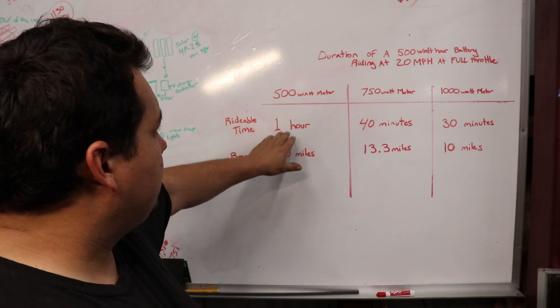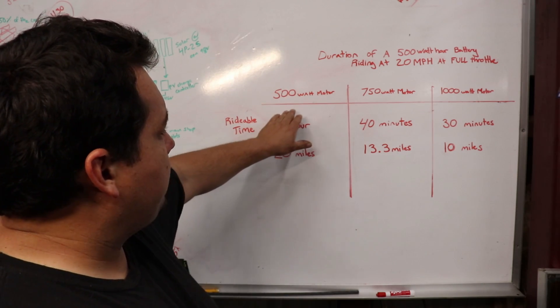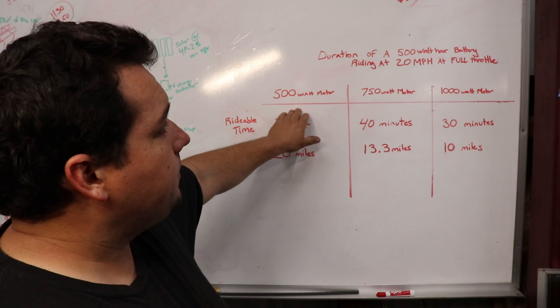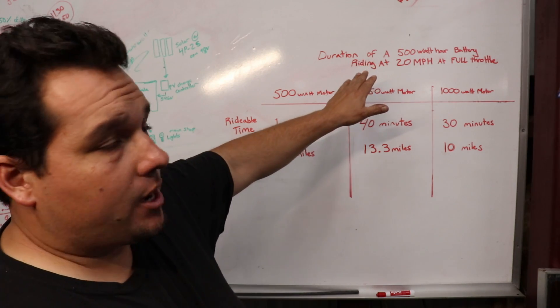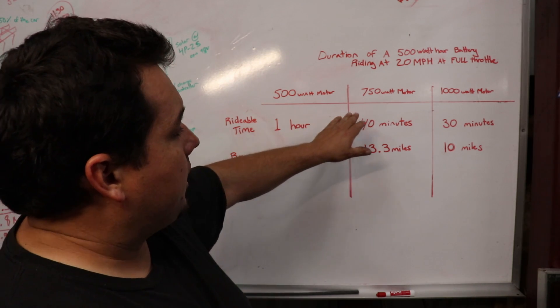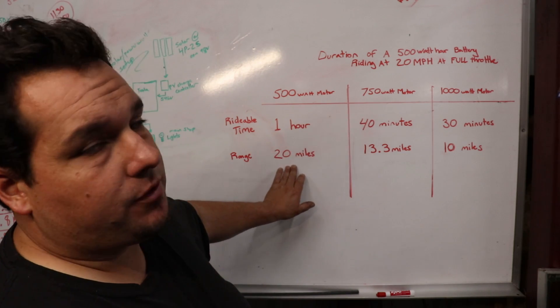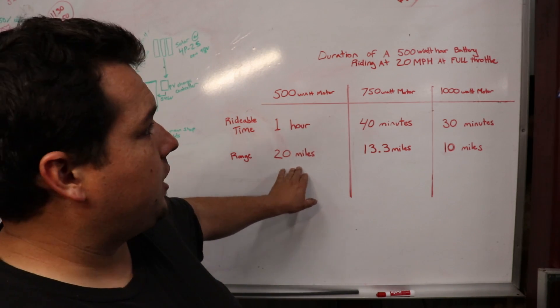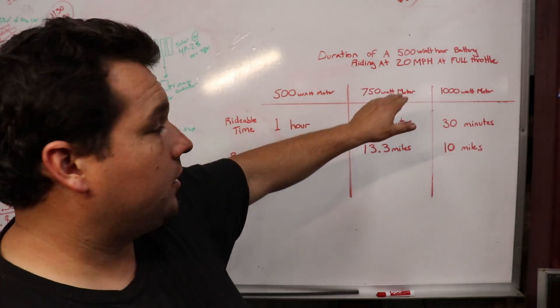If we break it down, you can see that if you have a 500-watt motor and a 500-watt-hour battery, it will take one hour to deplete that battery. And that will give you a range of 20 miles if you're riding at 20 miles an hour.